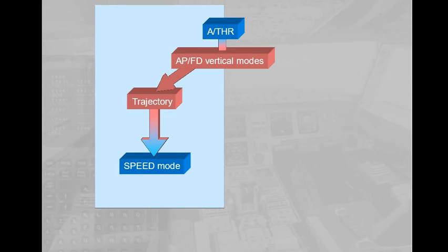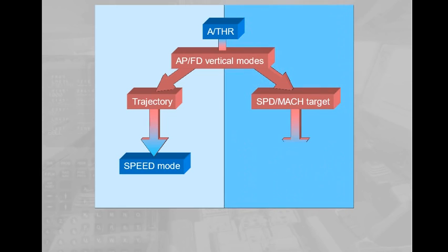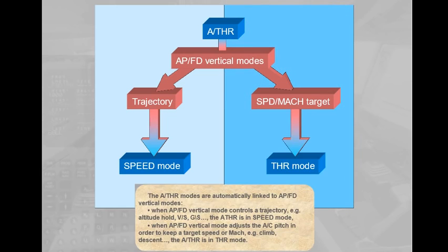When the autopilot flight director vertical mode adjusts the aircraft pitch in order to keep a target speed or Mach — for example during climb or descent — the autothrust is in thrust mode.